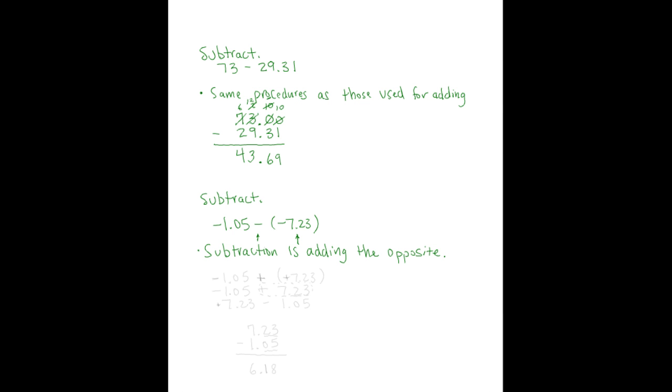Alright, so if subtraction is adding the opposite, we can rewrite this problem as negative 1.05 plus, remember we're changing subtraction into addition, and the opposite of negative 7.23 is positive 7.23. Okay, so now we have a single positive number inside parentheses, which means we don't need the parentheses anymore. We also don't need the plus in front of 7.23. We largely put that there just to make clear that we were using the opposite. So we can rewrite this as negative 1.05 plus 7.23.